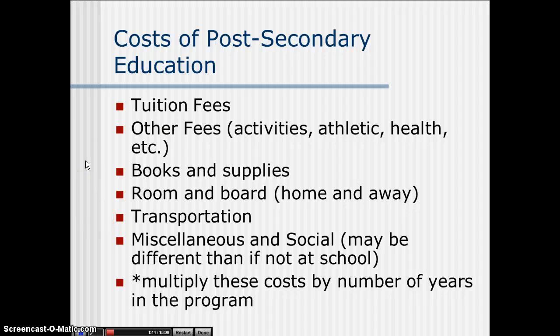When looking at the costs of post-secondary education, you have to think about the following expenses: tuition fees and additional fees covering activities, athletic centers, health insurance, and so on. You also have to pay for books and supplies, and it's a good idea to look into used books as much as possible. There's also room and board and rent, as well as transportation costs. Especially if you're traveling very far away for school, you have to factor in airline tickets, train tickets, and so on.